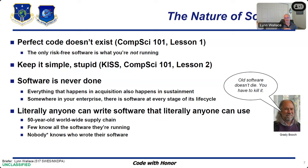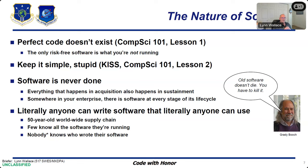Software is never done. As long as it's running, someone is maintaining it. Everything that happens during acquisition of software also happens during sustainment or maintenance — we apply security patches, fix bugs, change things, and we also implement capabilities during sustainment. The takeaway is that software is never done. If you're trying to protect an enterprise, at some point there's always software in some stage of its lifecycle. Here's a key point and a key problem: software has a zero barrier to entry in this industry.